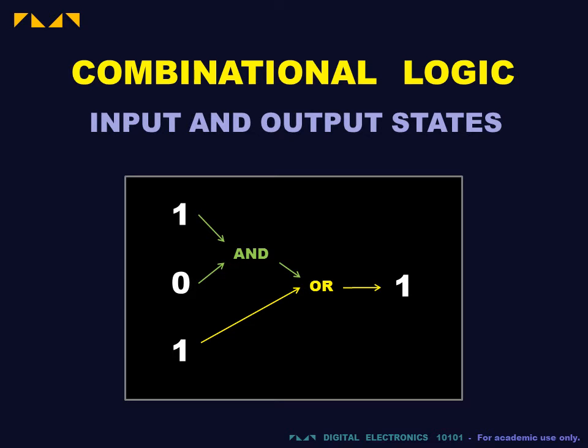The ensemble of present input states is also called the input state. Likewise, the ensemble of output states is called the output state. Together, the ensemble input and output states are known as the state of the circuit or of the system.